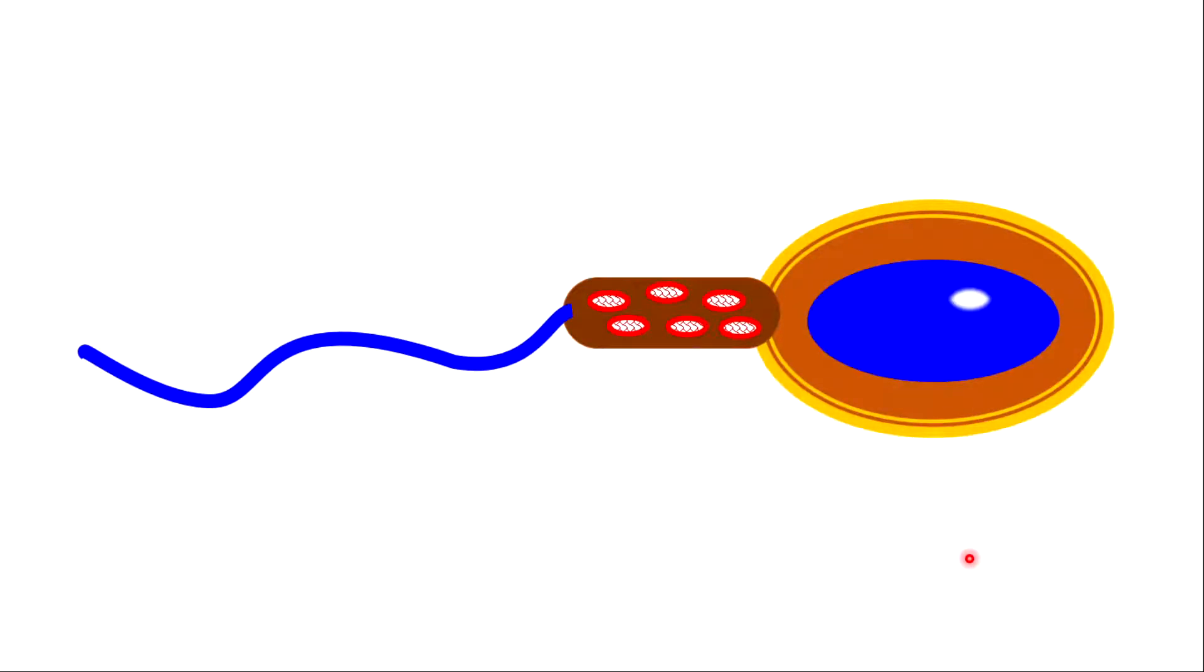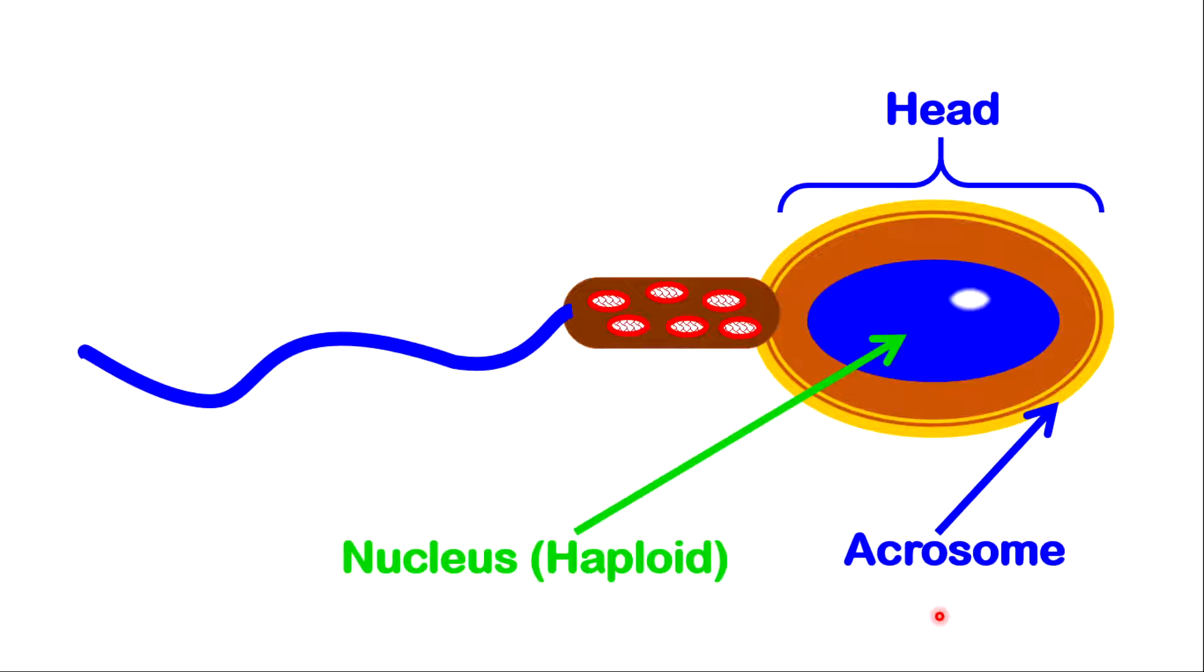Now, let's look at the sperm cell. The sperm cell contains a head. The head contains a very important structure called the acrosome. The acrosome is a layer where enzymes are secreted and stored. We have a nucleus like the egg cell. The nucleus in the sperm cell is also haploid, which means it contains only 23 chromosomes in the case of human beings, half the number compared to the regular body cells.